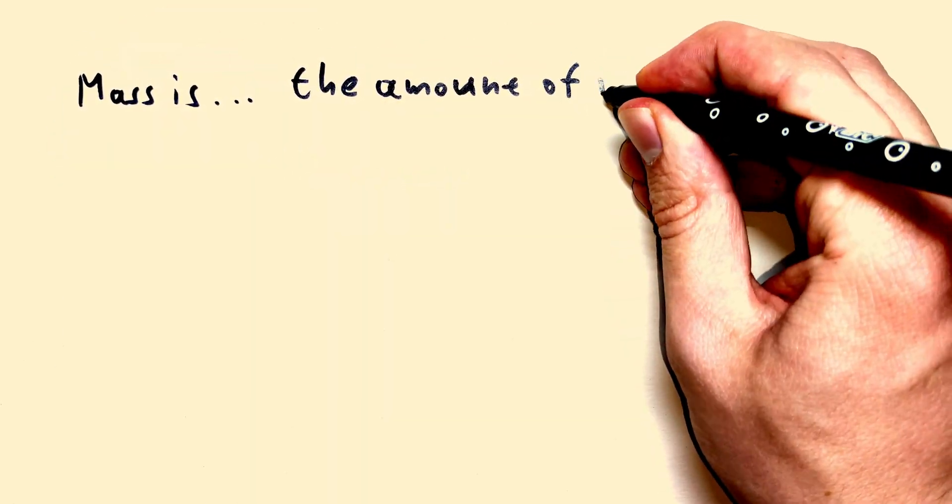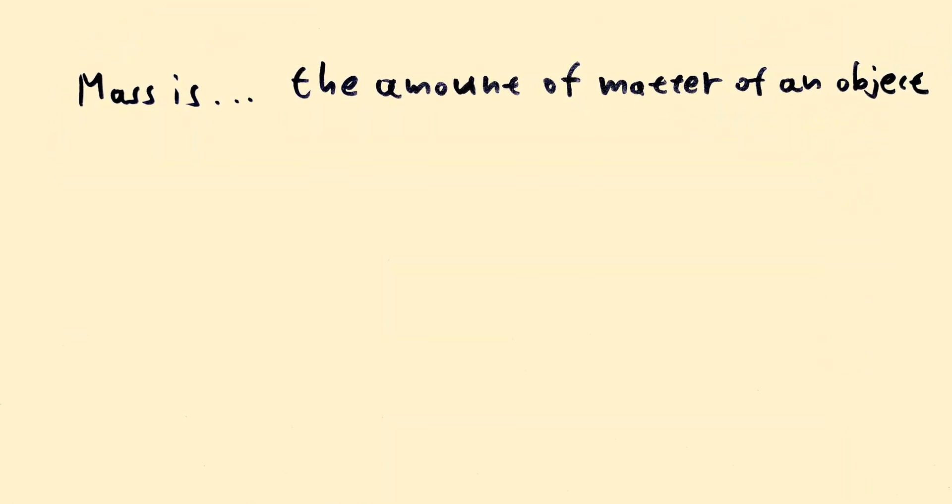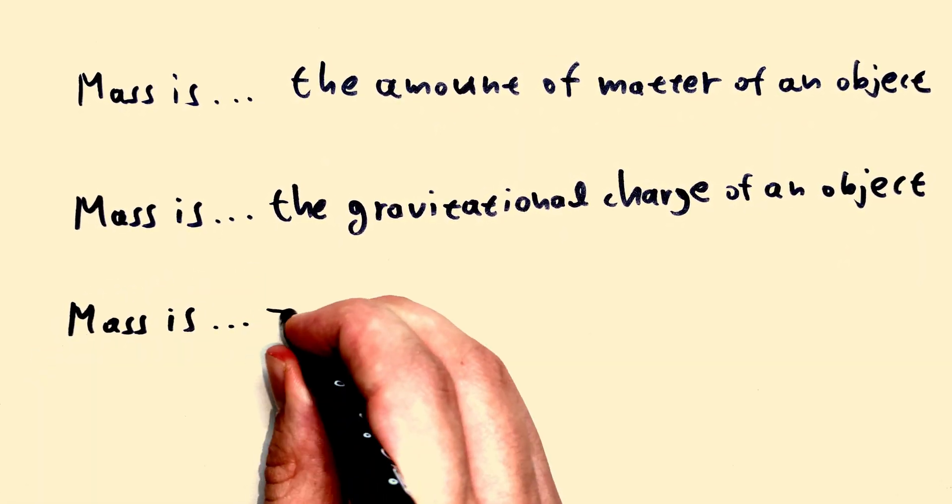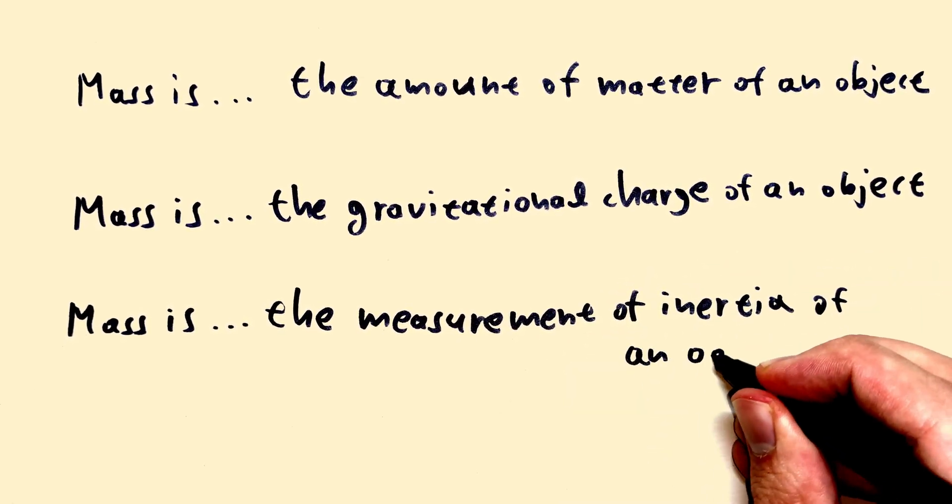Mass is the amount of matter of an object. Mass is the gravitational charge of an object. Mass is the measurement of inertia of an object.